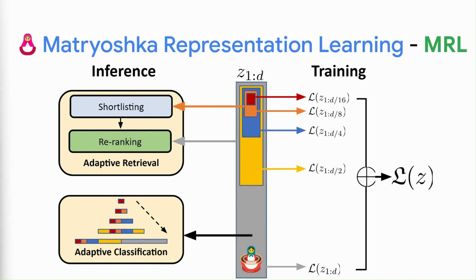MRL is easily adaptable to any representation learning setup and is scale, modality, and task agnostic. For example, MRL scales to a vision plus language representation learning task with 1 billion images without any hyperparameter tuning whatsoever.